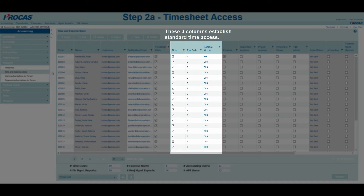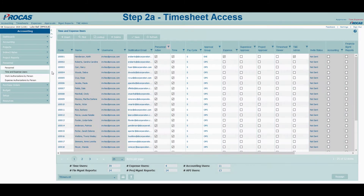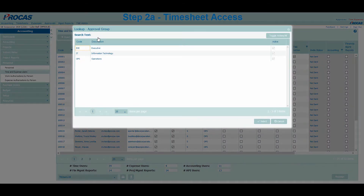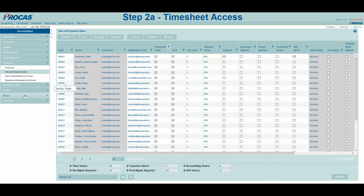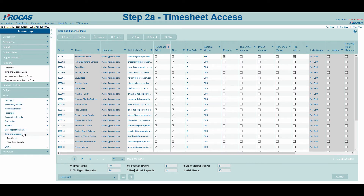We recommend making separate groups for employees and non-employees to be able to process timesheets in different batches. Then insert the approval group that the user belongs to. For both pay cycle and approval group columns, you can see available codes by selecting F9 on your keyboard. If a cycle or code needs to be created, it can be done by navigating to Setup, Time and Expense.